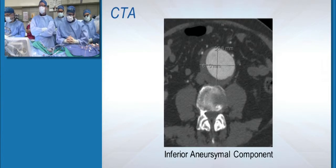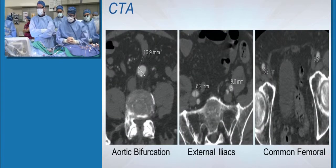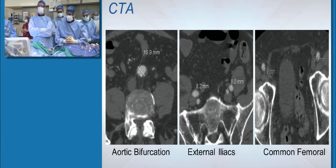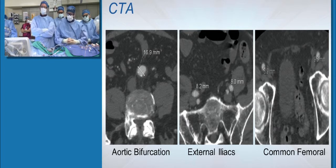Here's the larger inferior component at 6.2 centimeters. And finally, the distal abdominal aorta. He has relatively small external iliac arteries, but nice access vessels. The common femorals had just a small amount of plaque.